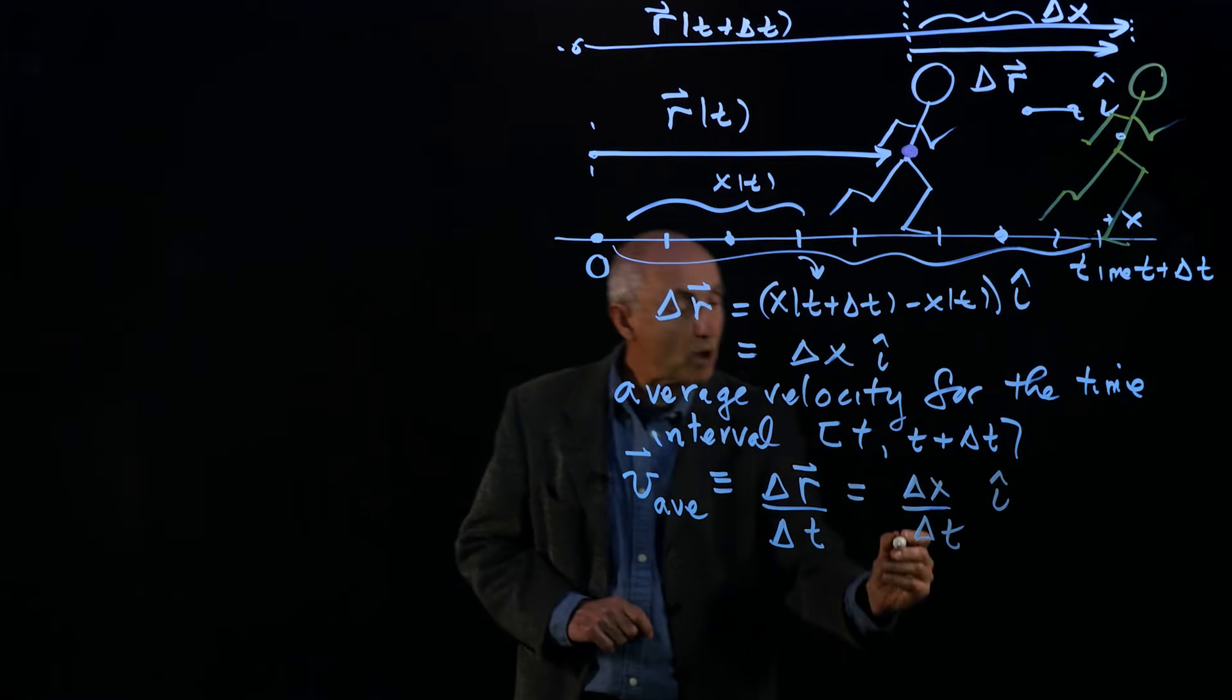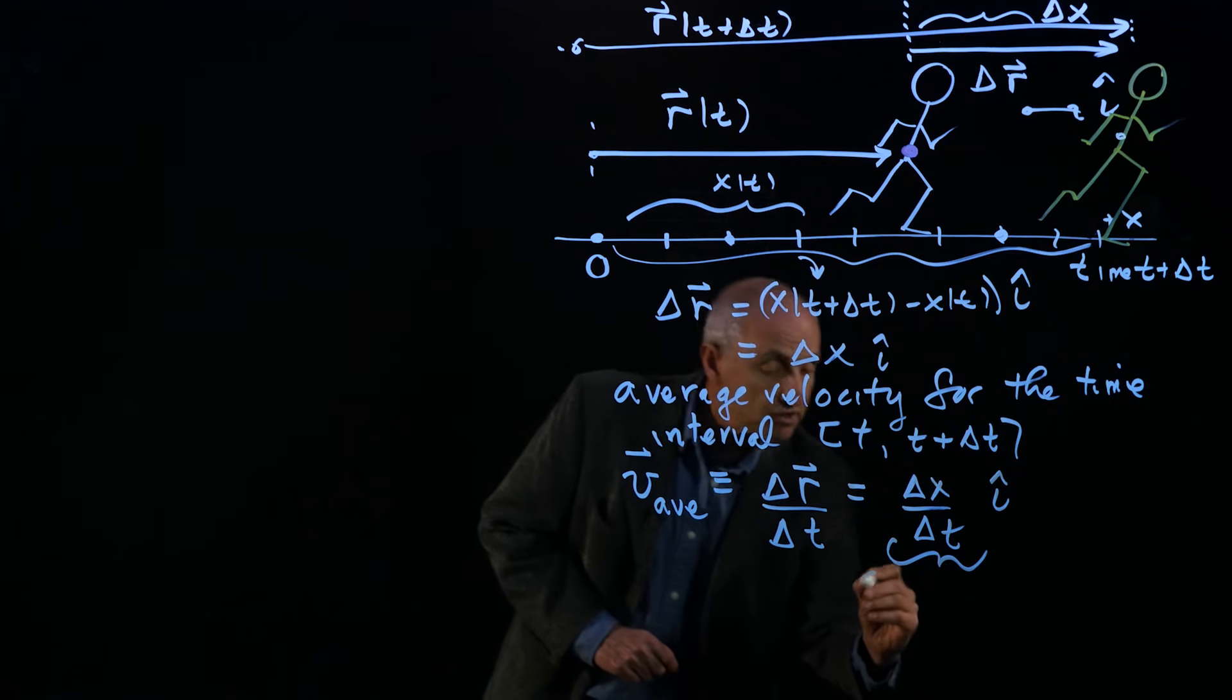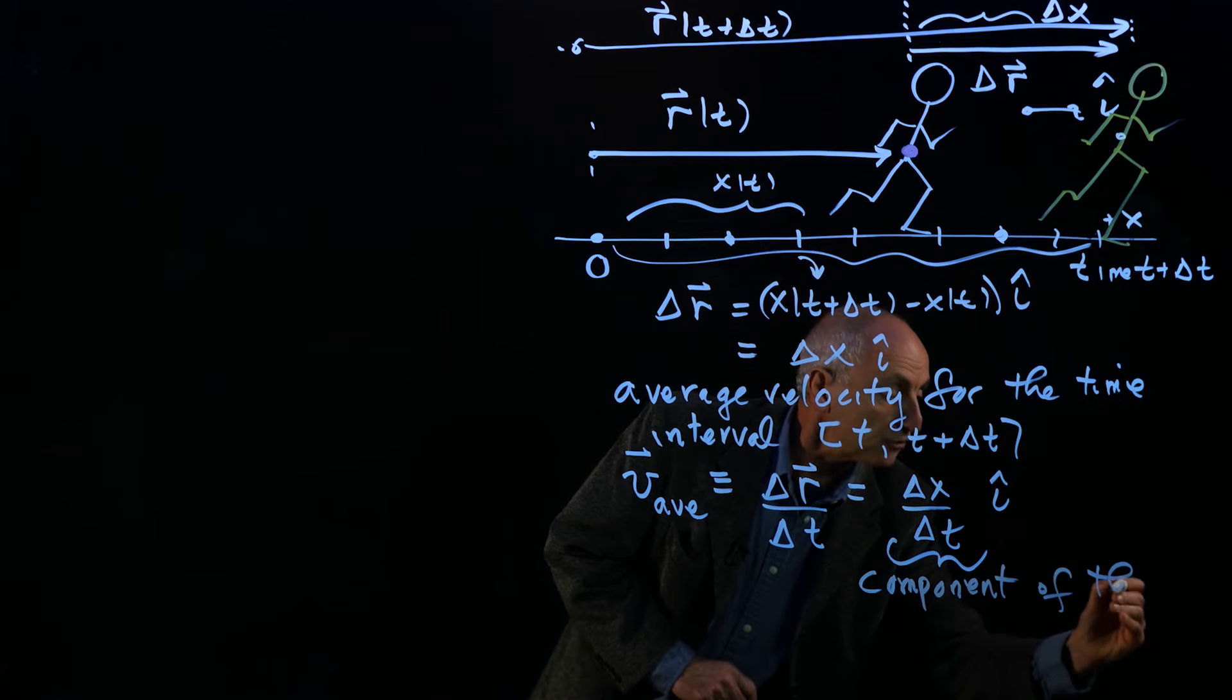And this component here is what we call the component of the average velocity. So this is the component of the average velocity.